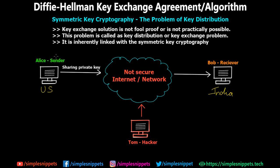Obviously Alice cannot take a plane and travel all the way to India just to share the key with Bob — they cannot do it physically. This is the major problem because it is not necessary that the sender and receiver stay nearby to physically share the key. It has to be done over the network, at least one time. This is where the problem of key distribution arises, and it is inherently linked with symmetric key cryptography.